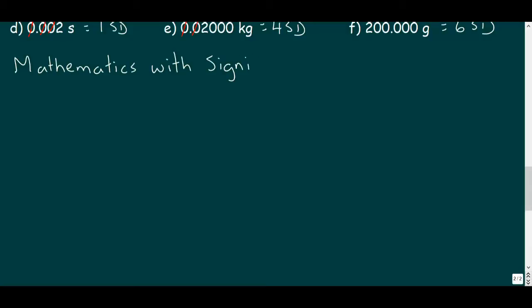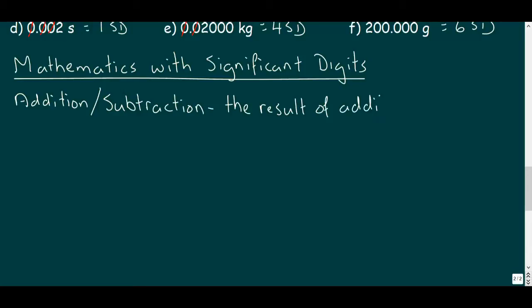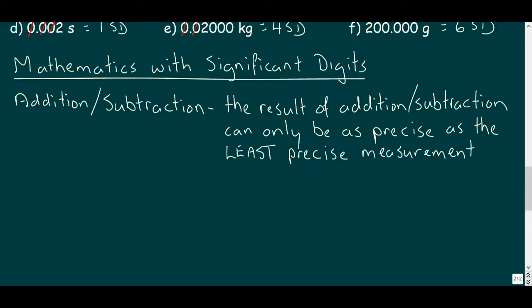We often make calculations based on measurements, so we need to establish some mathematical rules for sig digs. Let's start with addition and subtraction. The rule here is that the result of addition or subtraction can only be as precise as the least precise measurement. We'll look at an example where we add 2.6345 seconds and 7.24 seconds to get 9.8745 seconds. But our least precise digit is the one hundredth of a second, so we leave the hundredth place alone since the following digit takes us less than halfway to the next one hundredth of a second. This leaves us with 9.87 seconds.